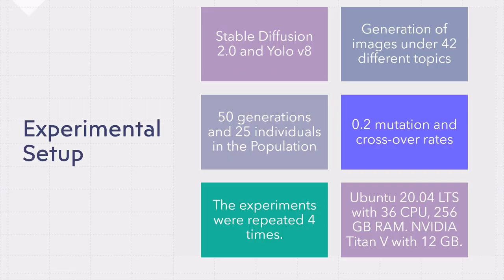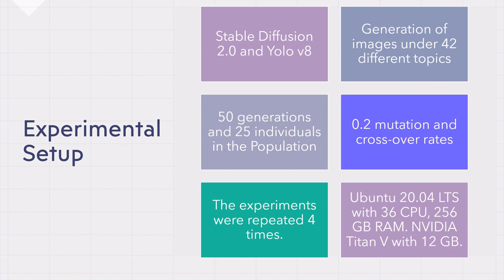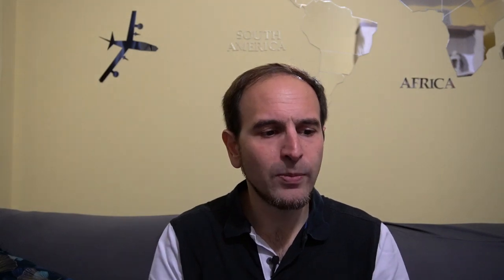For the experimental setup, we used Stable Diffusion 2 and YOLO 8, with 42 different topics — many animals and objects. For the genetic algorithm, because image generation is costly — about three to four images per minute — we used a low but reasonable number of individuals per generation, a 0.2 mutation and crossover rate, and repeated experiments four times. The system ran on Ubuntu 20 with 36 CPUs, 256 GB of RAM, and an NVIDIA Titan V GPU with 12 GB.